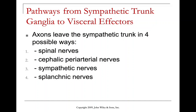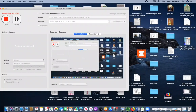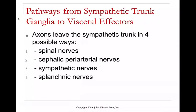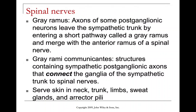Pathways from the sympathetic trunk ganglia to visceral effectors go four possible ways: spinal nerves, cephalic periarterial nerves, sympathetic nerves, and splanchnic nerves. Gray ramus axons of some postganglionic neurons leave the sympathetic trunk, enter the gray ramus, and merge with the anterior ramus of a spinal nerve. The gray rami communicantes contain sympathetic postganglionic axons connecting the sympathetic trunk ganglia to the spinal nerves, serving skin of the neck, trunk, limbs, sweat glands, and erector pili muscles.